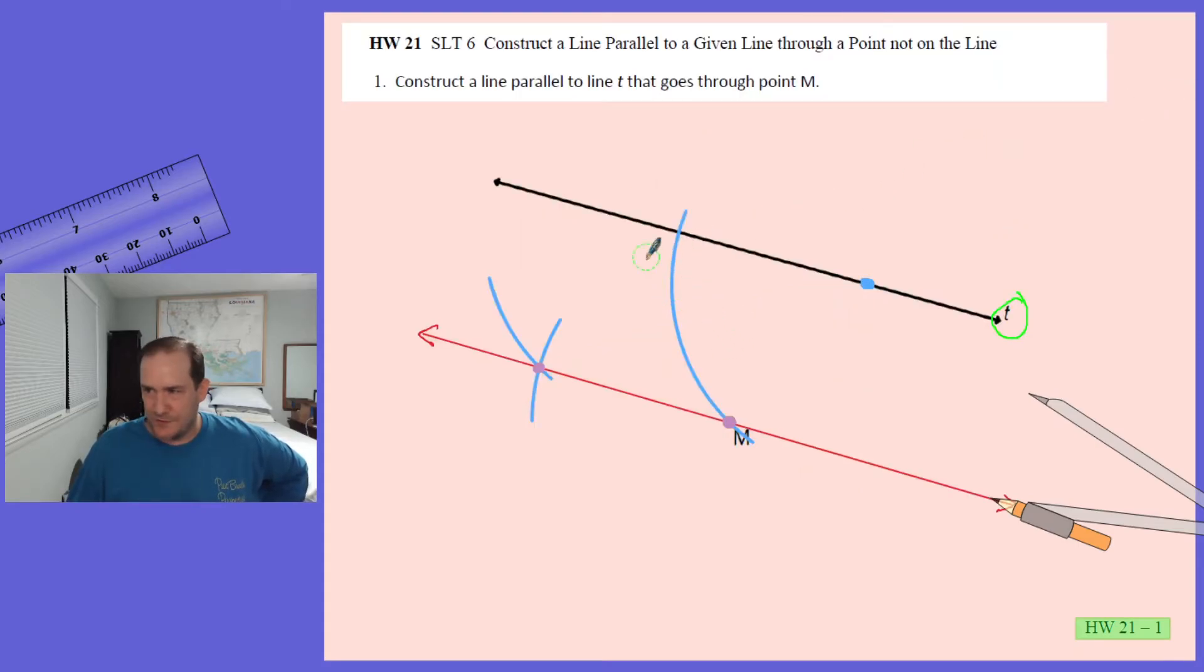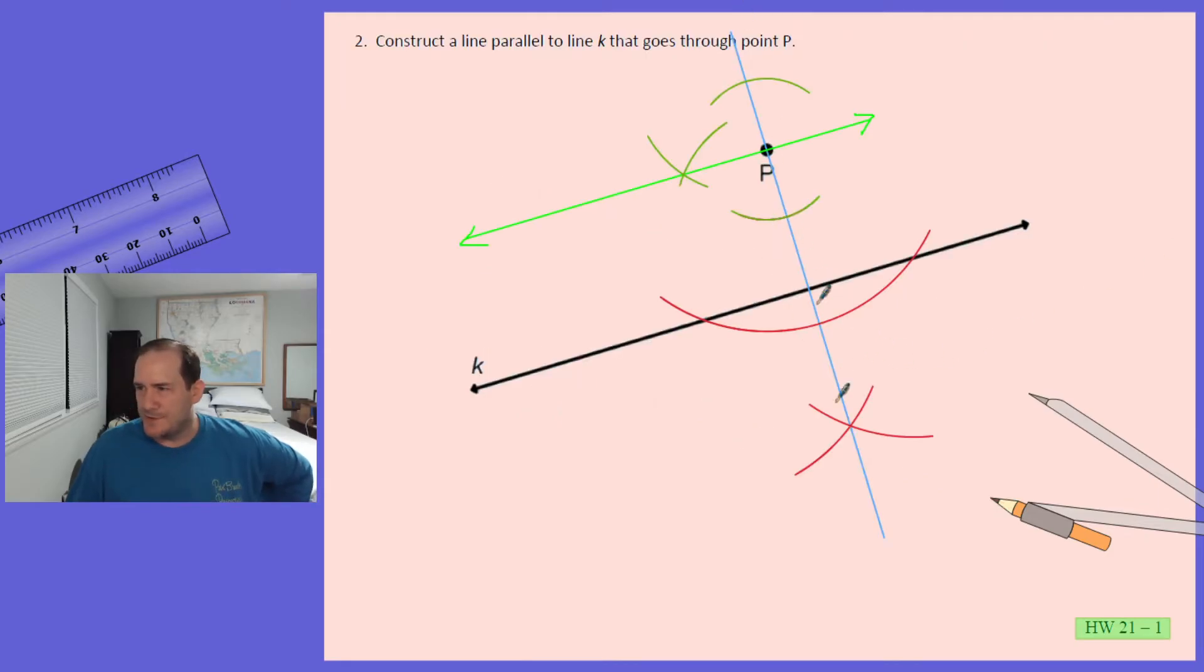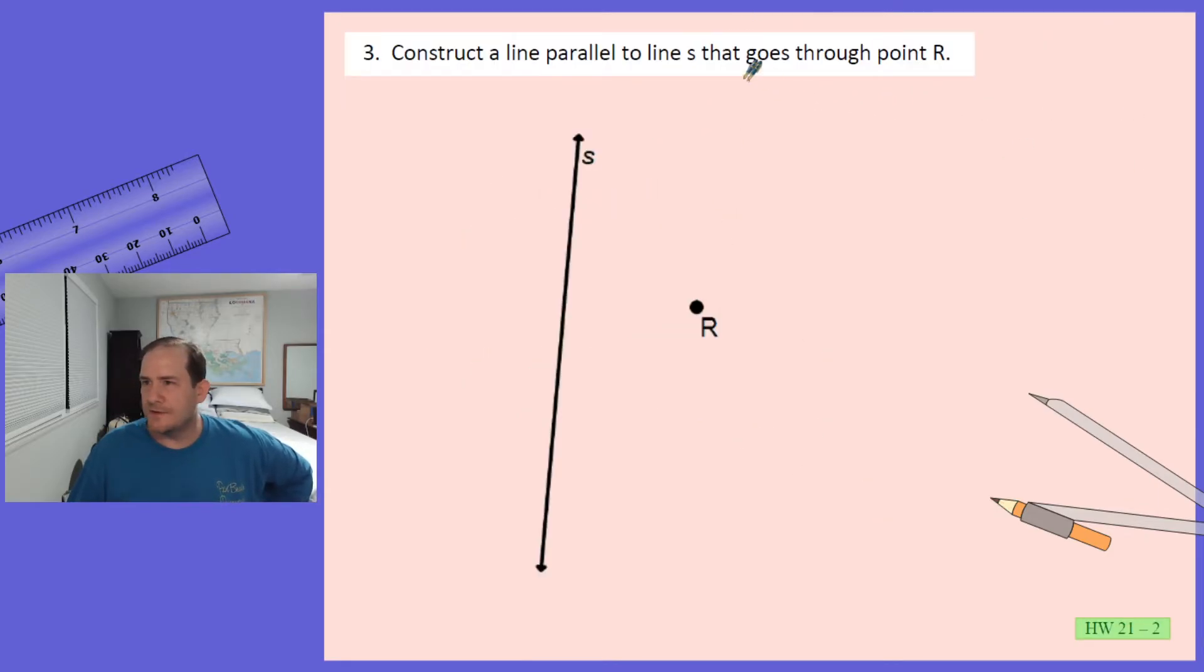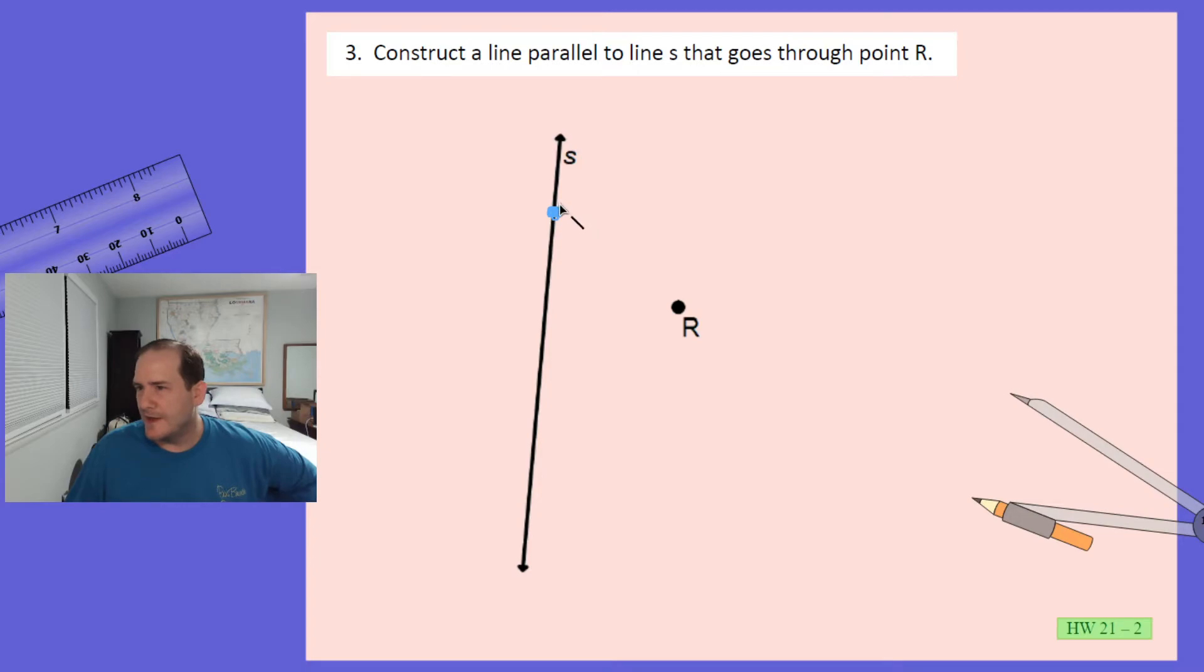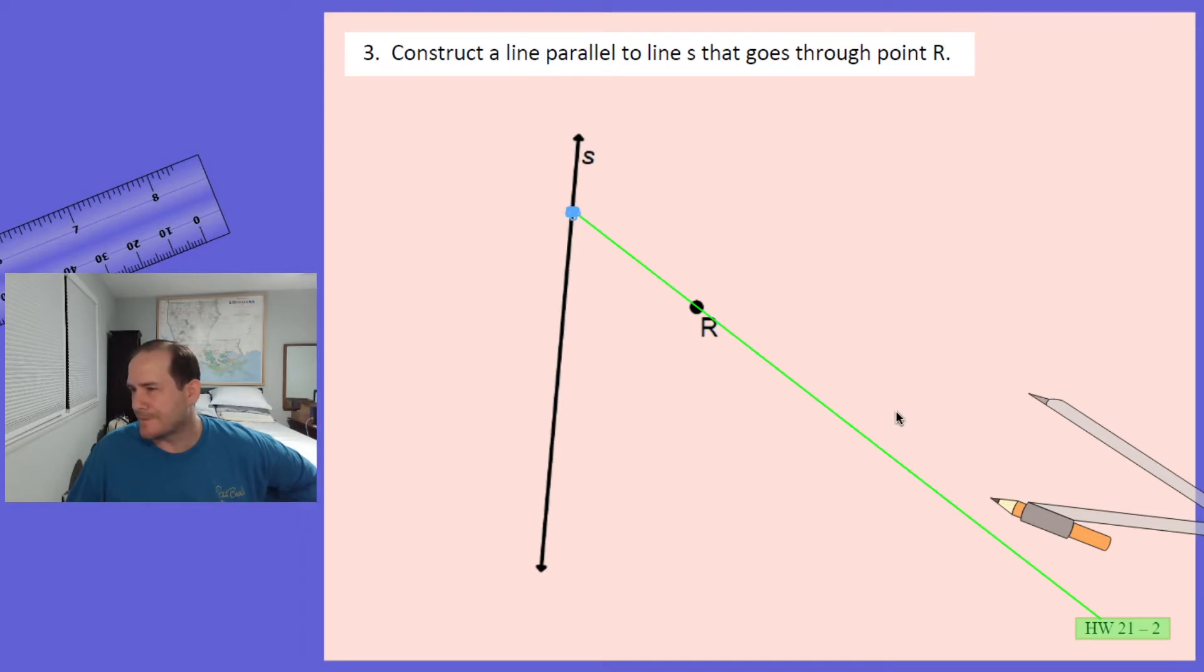But that's a different construction we can use. I still think the first construction for sure was way easier. You can tell it was way easier. We just picked a point, swung an arc, swung an arc, swung an arc. We never even changed our compass setting, right? Much easier. But this method's kind of cool too. Is there a three? Yep. It says construct a line parallel to line S that goes through point R. So I'll show you a third method. And for this one, you still kind of pick a point that's sort of behind point R. I would pick a point probably right here. But really what you're after is a line. You're going to draw a line that sort of passes through point R at an angle to the other line.